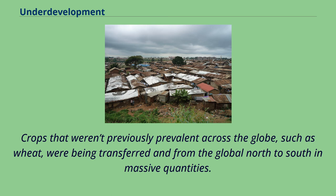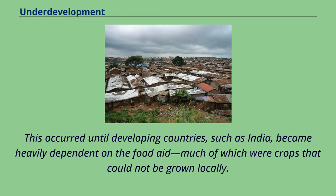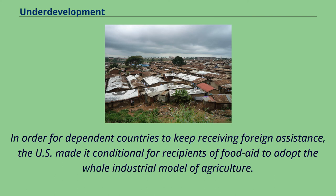Crops that weren't previously prevalent across the globe, such as wheat, were being transferred from the global north to south in massive quantities. This occurred until developing countries such as India became heavily dependent on the food aid, much of which were crops that could not be grown locally.